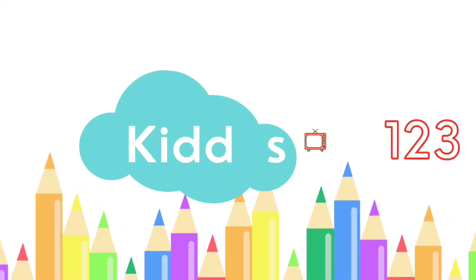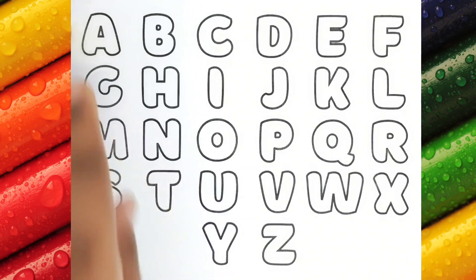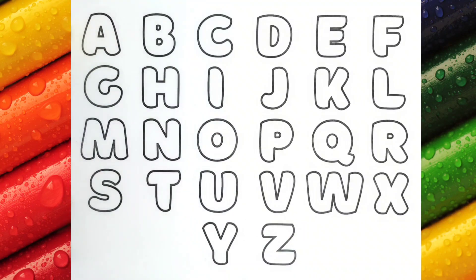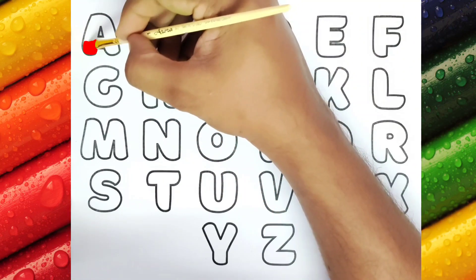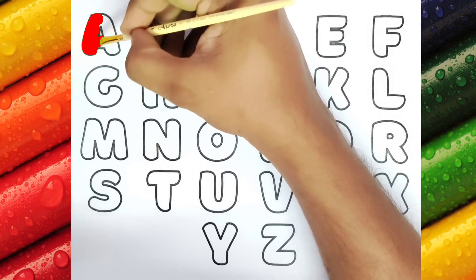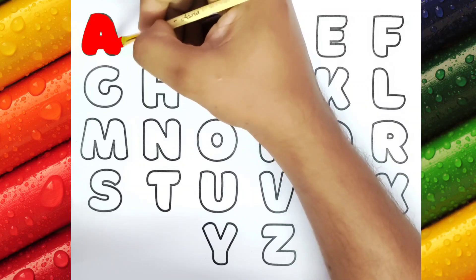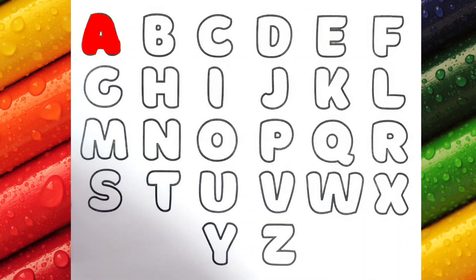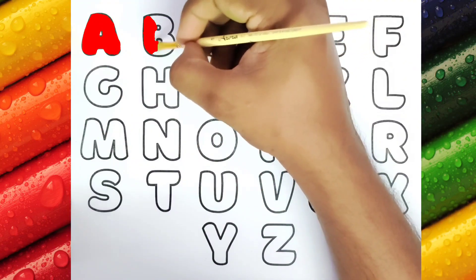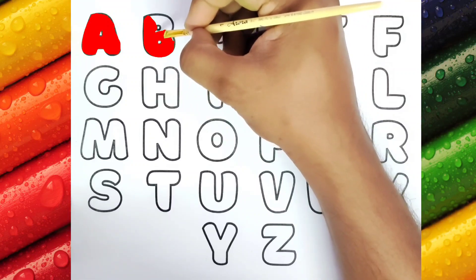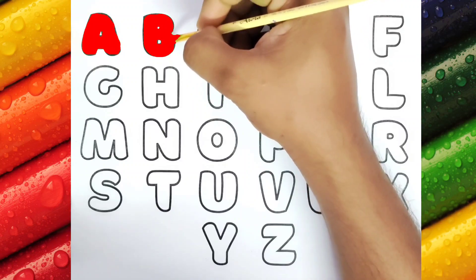Hello kids, welcome to Kiddos TV. Today we are going to learn alphabets. We will be coloring from A to Z. Let us get started. This is A for Apple. A for Apple. This is B and B for Ball. B for Ball.